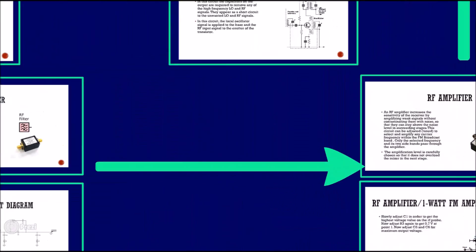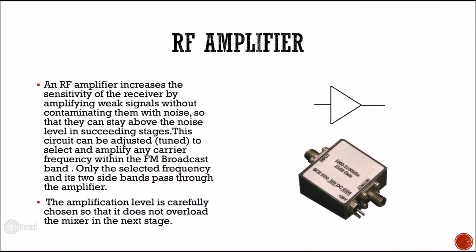Next is the RF amplifier. The RF amplifier increases the sensitivity of the receiver by amplifying weak signals without contaminating them with noise, so that they can stay above the noise level in succeeding stages. This circuit can be adjusted to select and amplify any carrier frequency within the FM broadcast band. Only the selected frequency and its two sidebands pass through the amplifier.